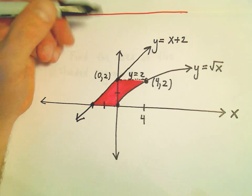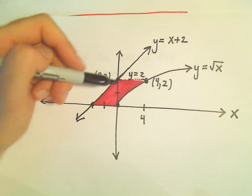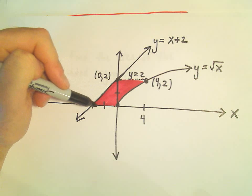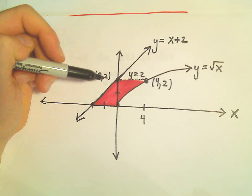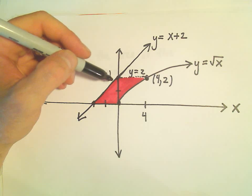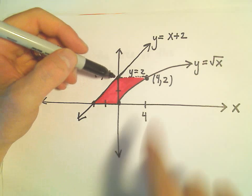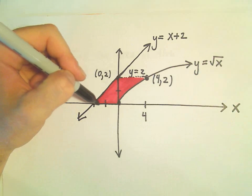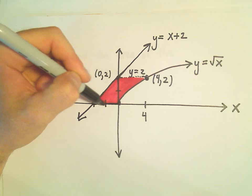Alright, so again, I think if we were going to integrate this with respect to x, notice we would have to break this up into two separate integrals again. To get the area of the triangle, we could really just use geometry, but if we wanted to think about it in terms of an integration, we would take the top function, which is x plus 2, and then we would subtract the bottom one, which would just be y equals 0.